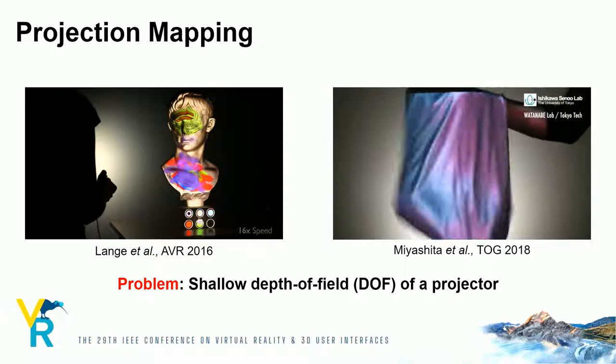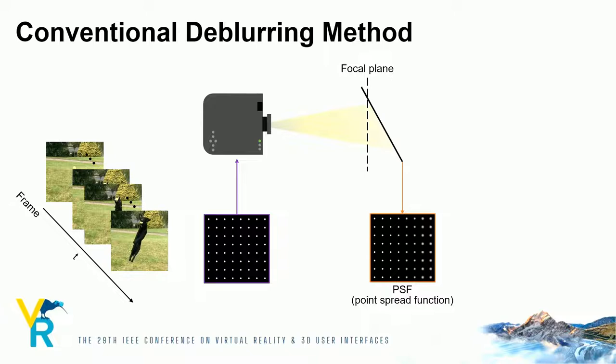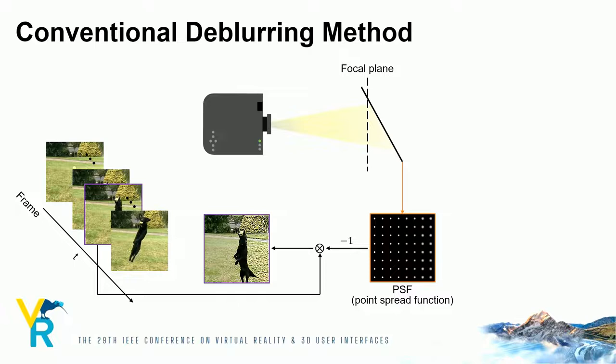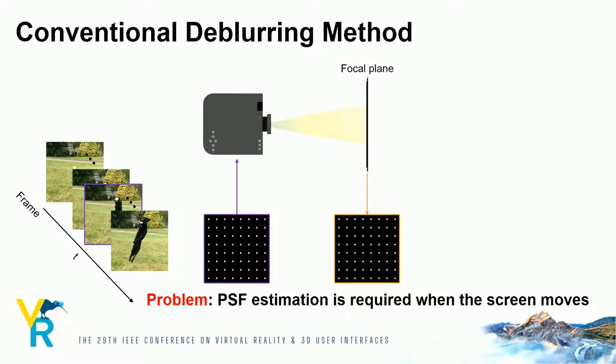Conventional de-blurring methods project a spatial pattern such as a dot pattern for estimating the blur kernel, or the point spread function (PSF). Then, the inverse of the PSF is convolved with the target image to obtain the edge-enhanced compensation image. The compensation image alleviates the defocus blur in the projected result. However, these methods require frequent projection of a dot pattern when the screen is moved, which is not preferable in user experience.